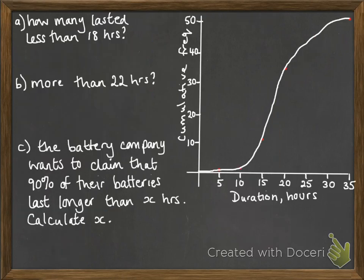You might be asked some other questions. This is the same graph from the previous slide, but we've got some more questions to look at. The first one is: how many lasted less than 18 hours? We draw a line at 18 hours, read off the value, and it's approximately 31.